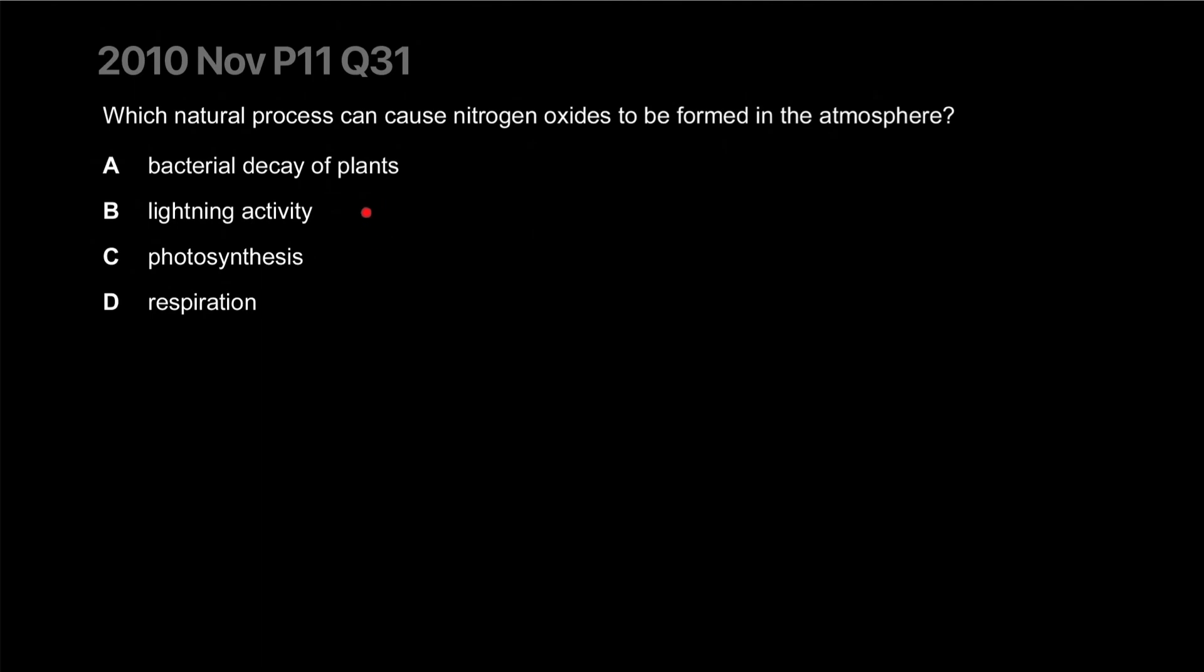Which natural process can cause nitrogen oxide to be formed in the atmosphere? Bacterial decay of plants, lightning activity - yes. Photosynthesis, respiration - nope. Correct answer is B. One way to remember it is nitrogen is very stable, it has a triple bond, and high activation energy is required to break this bond and make it react with oxygen. That can only be done in high energy areas like lightning is one such place, and the other one is car combustion engines because combustion engines get really hot and they also suck in air. Nitrogen is present in those high heats.